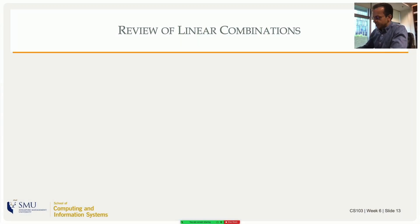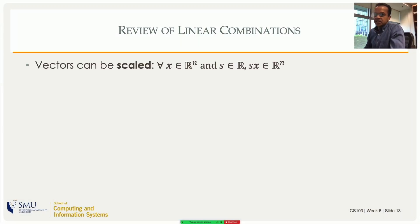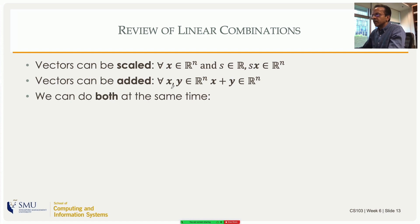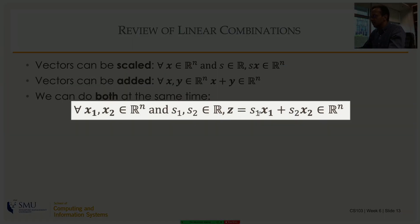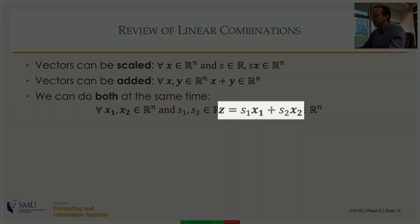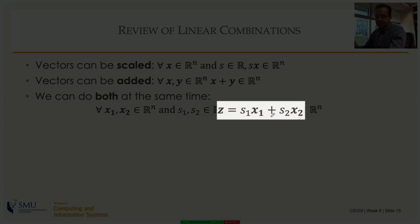Let's look at linear combinations once more. The basic operations on vectors: vectors can be scaled — if you scale a vector by a scalar in R, you get another vector in Rn. If you take two vectors in Rn and add them, you get another vector. So Rn is closed under scalar multiplication and vector addition. With both operations, we can take x1, scale it by s1, take x2, scale it by s2, and add them — that is what we call a linear combination.